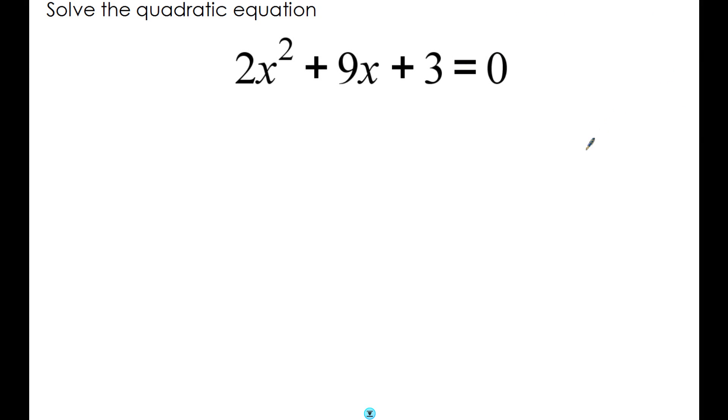Let's look back at that original problem now. Solve the quadratic equation 2x² + 9x + 3 = 0. This is how we set out our working and how we can use the formula to solve this problem. The first thing to do is write down what a, b, and c are for this equation.